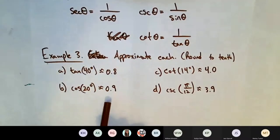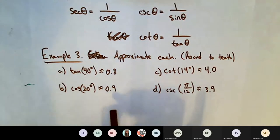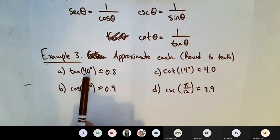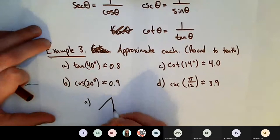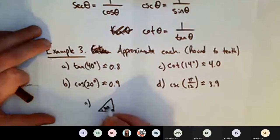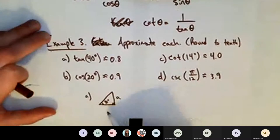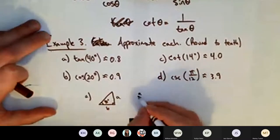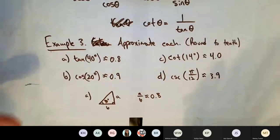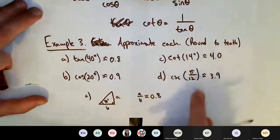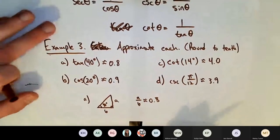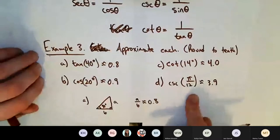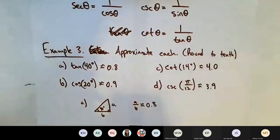Remember these numbers represent the ratio of two sides of a triangle. For part A, if you drew a right triangle with a 40-degree angle, the ratio of the opposite over adjacent — the tangent — is approximately 0.8. These trig functions are outputting a ratio of two sides. These are not special angles, so they don't get nice exact representations like √2/2.